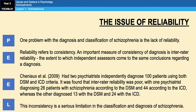One problem with the diagnosis and classification of schizophrenia is that it lacks reliability. An important measure of consistency is inter-rater reliability — the extent to which independent assessors come to the same conclusions regarding a diagnosis. In research from 2009, two psychiatrists were independently asked to diagnose 100 patients using both the DSM and the ICD-10, and inter-rater reliability was found to be poor. One psychiatrist diagnosed 26 patients with schizophrenia using the DSM and 44 using the ICD, whereas the other diagnosed 13 with the DSM and 24 with the ICD. This massive inconsistency is a significant limitation of the classification and diagnosis of schizophrenia.